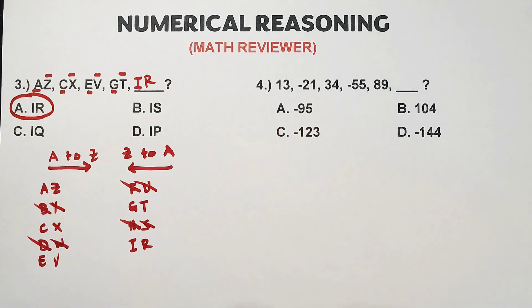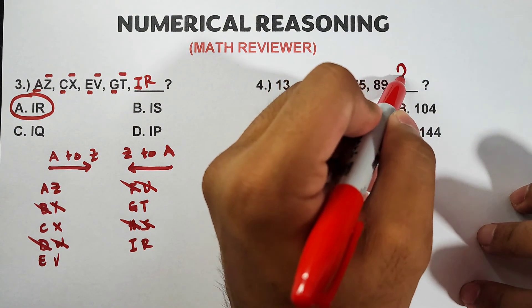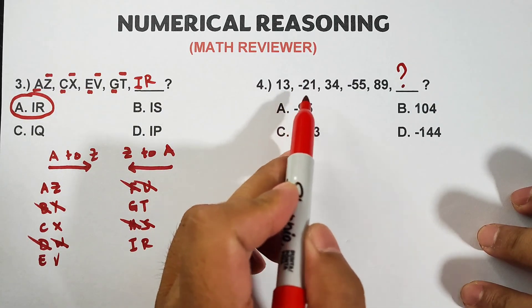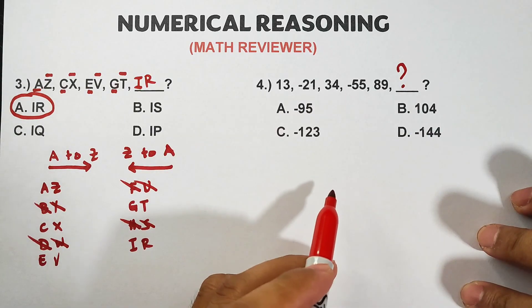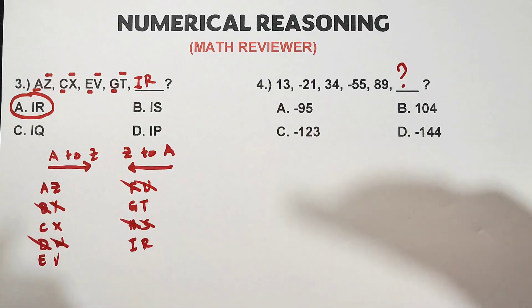You should be quick in recognizing patterns. Now for item number 4 guys, I will leave you this problem and make sure to put in the comment section what is your answer for this number pattern: 13, negative 21, 34, negative 55, 89, and blank. And tell me how you got that pattern.